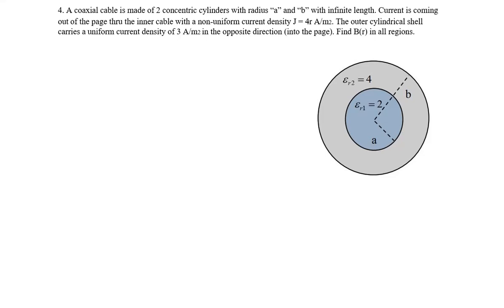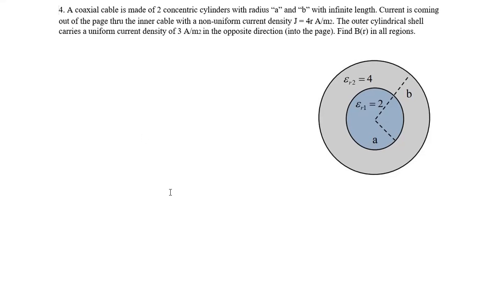Hello and welcome to another EE 140 tutorial video. In today's problem we are tasked to find magnetic flux density B as a function of R in all regions. We have a cable made of two concentric cylinders with infinite length — and infinite length is a good indicator that we'll be using Ampere's law.